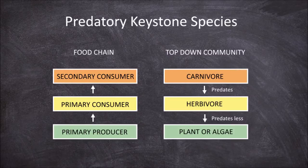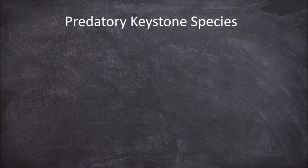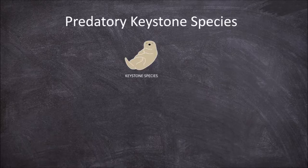An example of a predatory keystone species is seen between the keystone species the sea otter and their predation of the kelp consuming sea urchins.